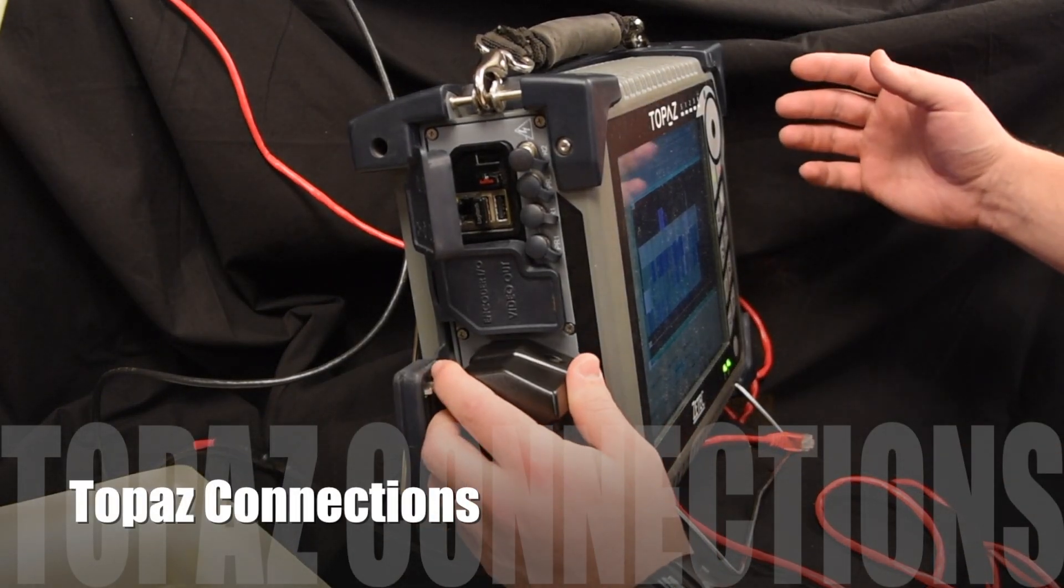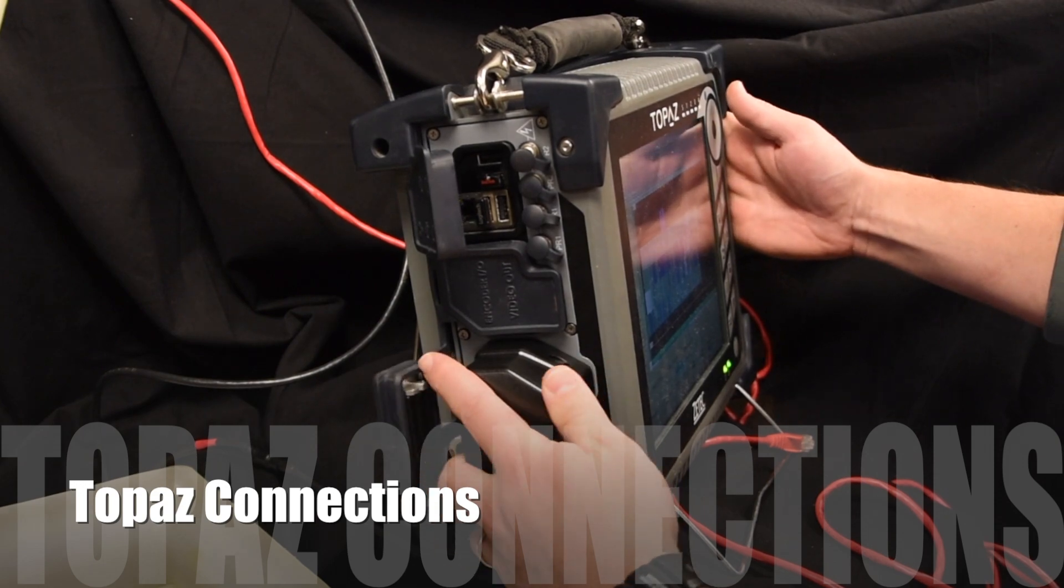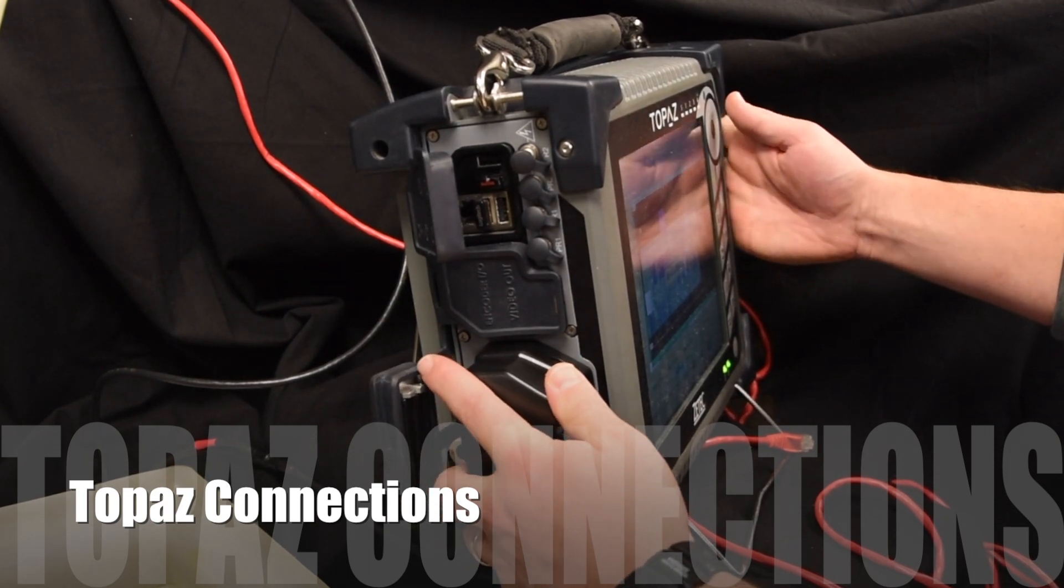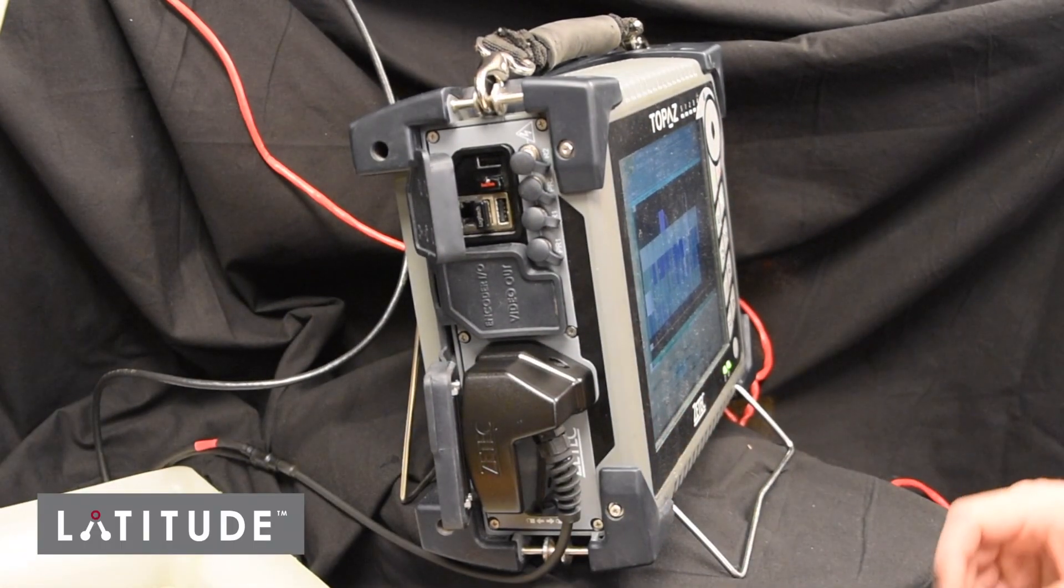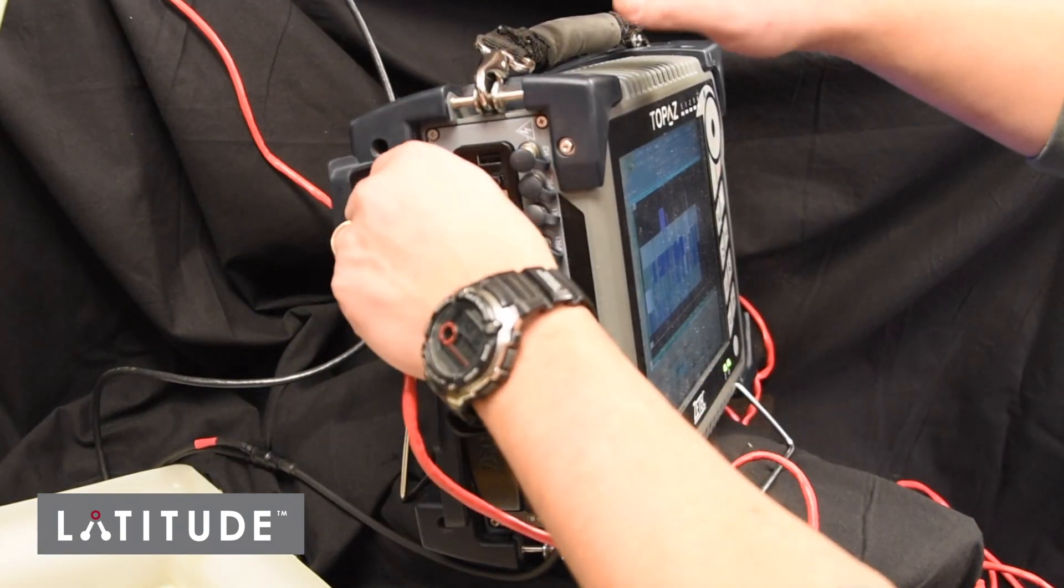On the phased array unit, the inspection probe is attached just as it normally would be, and then the Ethernet cable carrying the LATITUDE communication is connected to the inspection system.